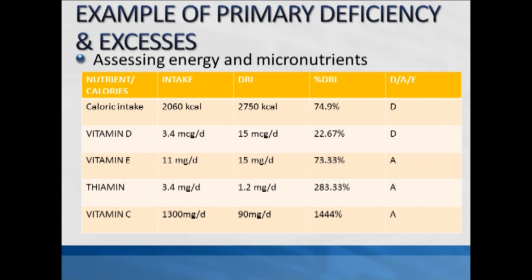For specific nutrients, there is a high risk of deficiency when intake is 66 percent or less than the DRI. For vitamin D, the intake is 3.4 micrograms and the requirement is 15 micrograms, giving 22.67 percent of the DRI — well under 66 percent, so that intake is deficient (D). Vitamin E is 11 milligrams per day against a requirement of 15, which is 73.33 percent of the DRI — not under 66 percent, so that intake is adequate.